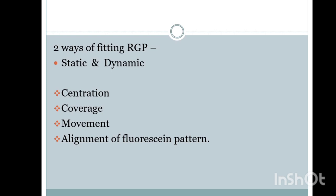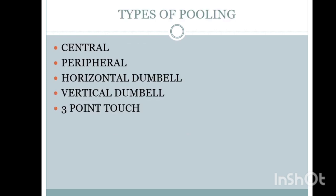Tell the patient to look to the right side and blink, left side and blink, up and blink, down and blink — every time evaluate the fit. This is a dynamic fit check. Coming to the types of pooling in fluorescein fitting: there may be central pooling, peripheral pooling, horizontal dumbbell, vertical dumbbell, and a three-point touch.